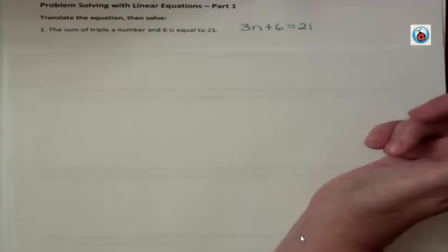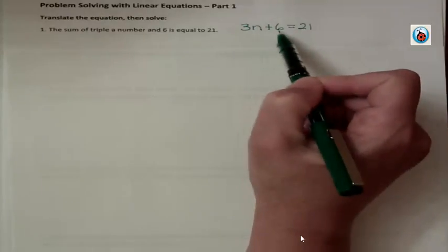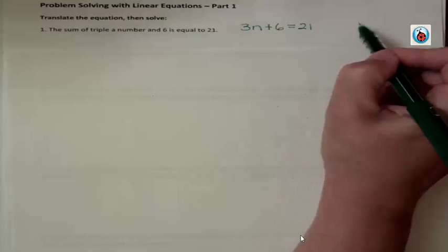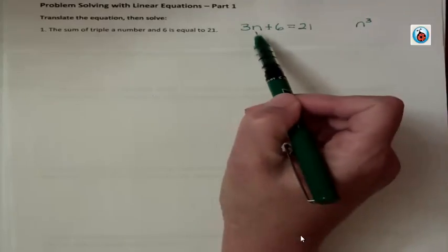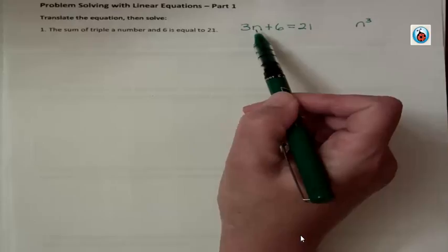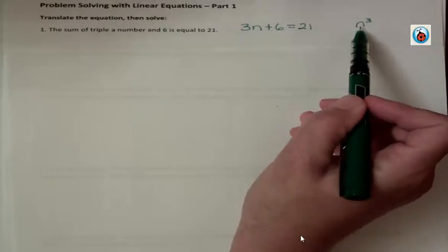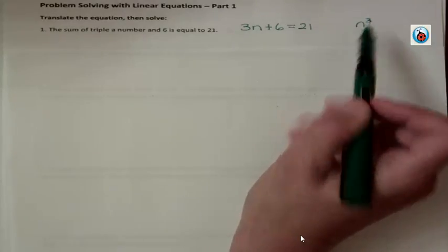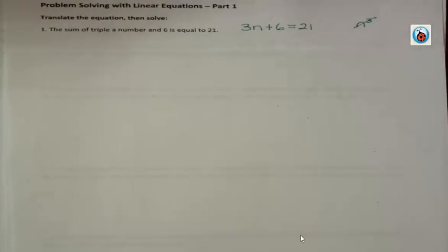So there's our equation. The sum of triple a number and 6. Triple a number is not to the third power, right? Sometimes people think, oh, triple a number to the third power. Think about if you made $10 an hour at your job, and they told you we're going to pay you triple time if you come in on Sunday. You know that what you would get would be 3×10 or $30 an hour for triple time. If you made $10 and it was to the third power, that would be $1,000 an hour, and there's no way triple means take something to the third power.